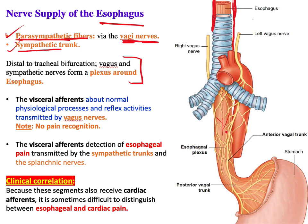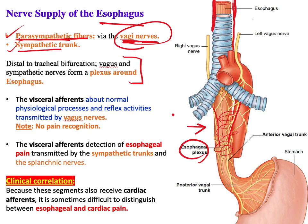The lower part of the esophagus is innervated by the esophageal plexus, created by the vagus nerves (parasympathetic) and sympathetic fibers from the sympathetic trunk at the thoracic level. Both sides of the vagus nerve contribute to this plexus, which contains both parasympathetic and sympathetic fibers.